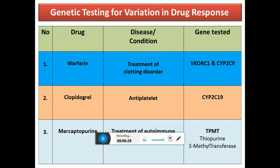Three commonly used drugs have FDA-approved genetic testing. Warfarin, an anticoagulant and blood-thinning agent, requires genetic testing to determine the appropriate dose. Clopidogrel, an antiplatelet agent and also a blood-thinning agent, can be evaluated genetically to determine suitability and correct dosing. Mercaptopurine similarly requires genetic assessment before use.